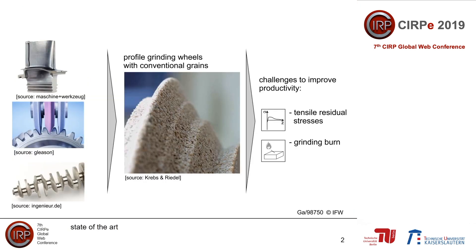Profile grinding wheels are used in applications such as turbine blades, gear wheels or crankshafts. Common in these applications is the use of tools that consist of conventional grains. However, these grains face challenges when increasing the productivity of the grinding process. Conventional grains have low thermal conductivity which leads to a high temperature in the process, resulting in tensile residual stresses or grinding burn on the surface of the machined workpiece.